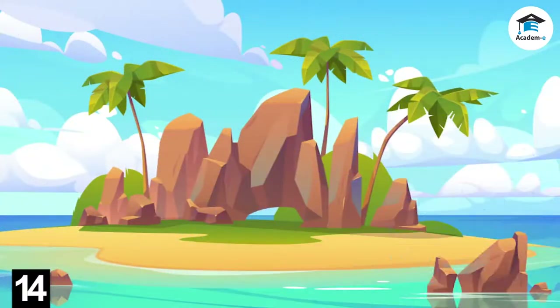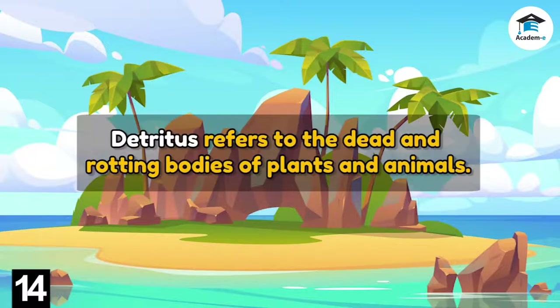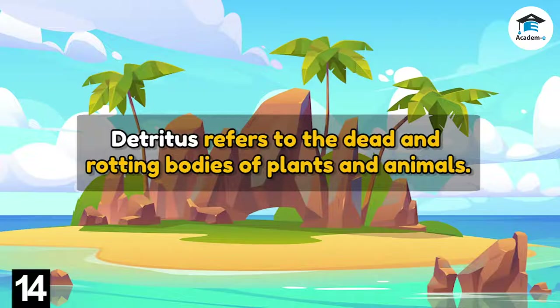However, not every plant or animal gets eaten — when they die, they rot. Detritus refers to the dead and rotting bodies of plants and animals. They are acted on by bacteria, which break down the stored energy in their bodies into materials that can be used by other animals, cycling nutrients and energy in nature.